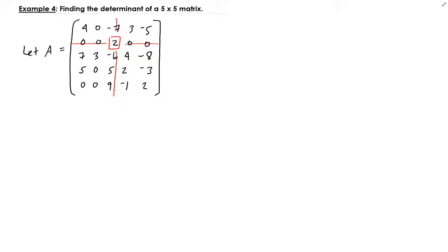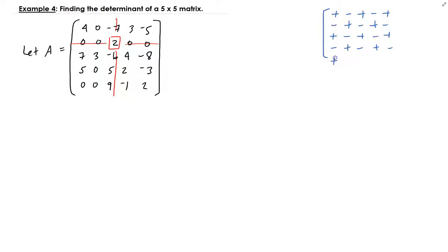Starting with this value, let's recall the sign conventions. For a five by five matrix, the signs go: plus, minus, plus, minus, plus, plus, plus, minus, minus, and so on.